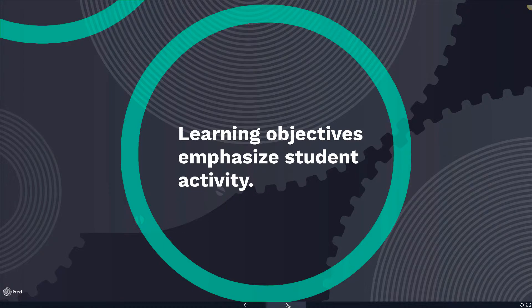Learning objectives focus exclusively on student behavior. Imagine that you're teaching a class and your learning objective is that the student will understand the process of inductive and deductive reasoning. This is focusing on understanding the material being taught, but it's not specifically telling the student what they're going to do to learn that.